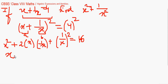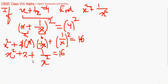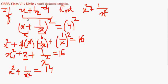So we have x squared plus 2 — because x and 1/x cancel — plus 1/x squared equals 16. Carrying 2 to the other side gives x squared plus 1/x squared equals 16 minus 2, that is 14. From the given value of x + 1/x, we can find x squared + 1/x squared.